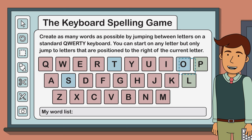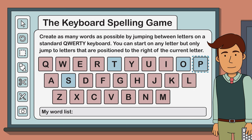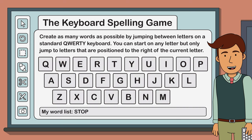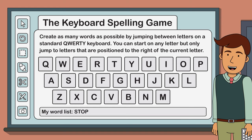Let's jump to the letter P to complete the word STOP — S, T, O, P. Once you've completed a word and written it down, the game resets and you can start again from any letter on the keyboard. Remember, your goal is to spell as many words as possible.